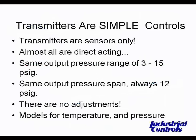Let's reiterate a couple of points on the transmitters. Transmitters are sensors only. Almost all of them are direct acting. All have the same output range of 3 to 15 PSIG. Same output span, always 12 PSIG. There are no adjustments — you cannot adjust these in the field. Models are available for temperature, pressure, and humidity.